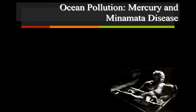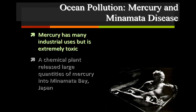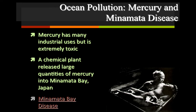Minamata Bay in Japan is another example. A company there released mercury into Minamata Bay, and the fishermen ate the fish and noticed changes. They really saw the effects in cats and other animals eating the fish, but also in women's unborn children — when those children grew older, they had neurological problems. So with Minamata Bay, mercury is a neurotoxin. A YouTube video on this will be posted for you.